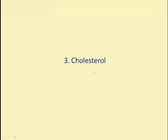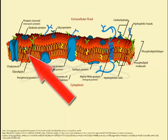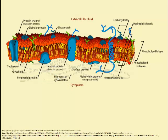Besides proteins, there are other materials embedded within the cell membrane. In animal cells, there is cholesterol, which provides varying degrees of rigidity. In warm temperatures, cholesterol restrains the phospholipids and prevents them from moving around too much — if they drift apart, the cell membrane could disintegrate.